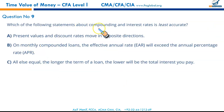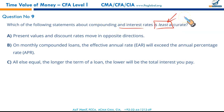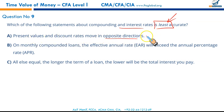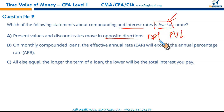Which of the following statements about compounding and interest rates is least accurate? Focus on the word 'least.' Statement A: present value and discount rates move in opposite directions — absolutely correct. If the discount rate increases, present value falls; if discount rates decrease, present value goes up. That's a correct statement.